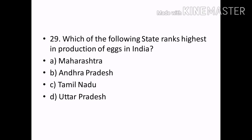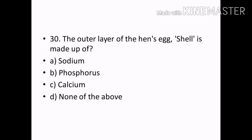Which of the following states ranks highest in production of eggs in India? Options — Maharashtra, Andhra Pradesh, Tamil Nadu, Uttar Pradesh. Correct answer: Option B — Andhra Pradesh.